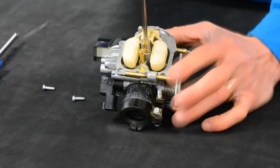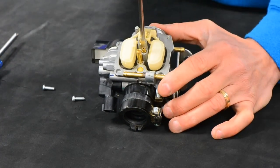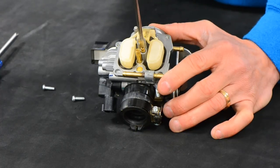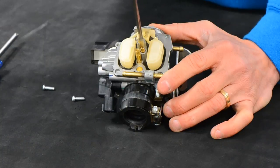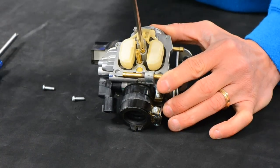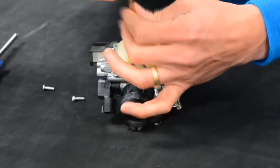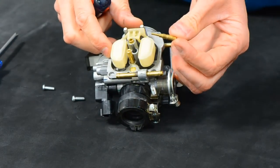We'll remove this pilot first. Be aware, these are brass, they're super soft, they're fairly easy to break if you're not paying some attention. So again, get a screwdriver that fits that correctly, get it in good. That should turn out pretty easy. Pilot jet.